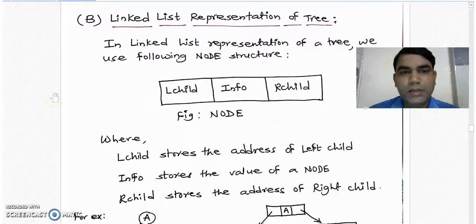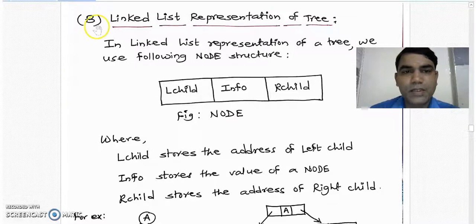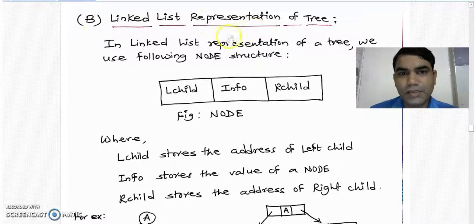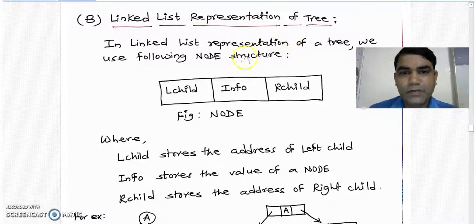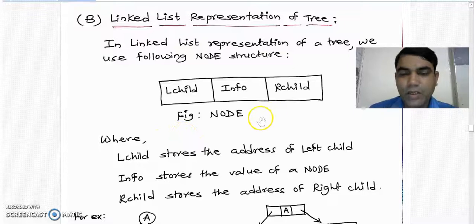Now we will see another method of representing a tree. That is linked list representation. In this representation, we use the node structure as shown in this figure. A node consists of 3 parts in this case.